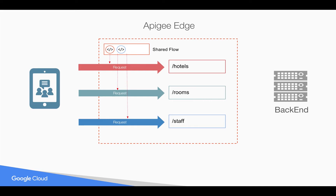For example, you have a security policy like a spike arrest policy that will prevent denial-of-service attacks. You don't want an API developer in the future, by mistake, creating an API proxy and forgetting to add the spike arrest policy. So you want to force execute the shared flows in API proxies even if the API proxy is created in future.